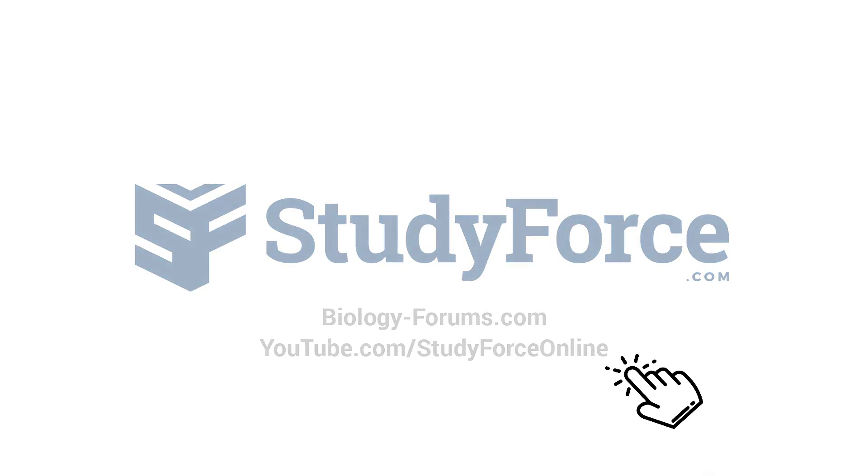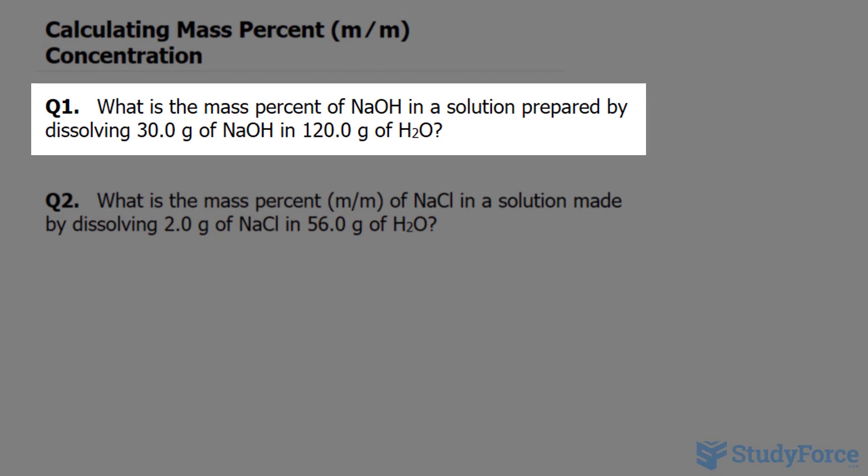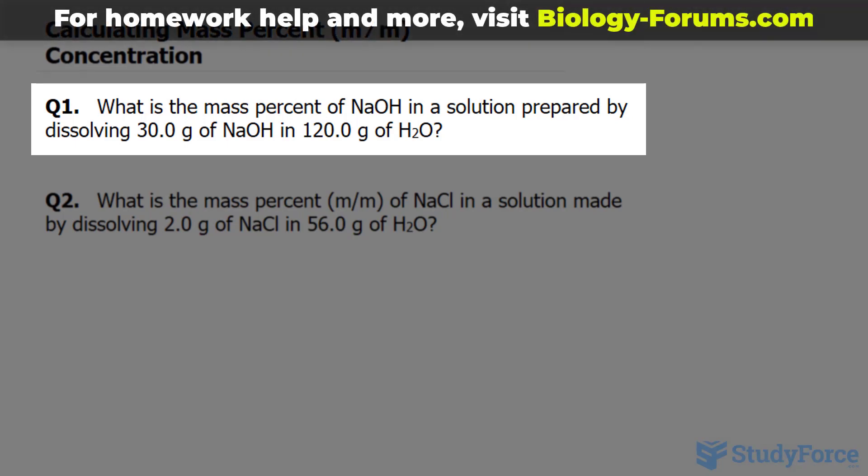In this quick lesson, I'll show you how to calculate mass percent concentration. Question one reads: what is the mass percent of NaOH in a solution prepared by dissolving 30.0 grams of NaOH in 120.0 grams of H2O?